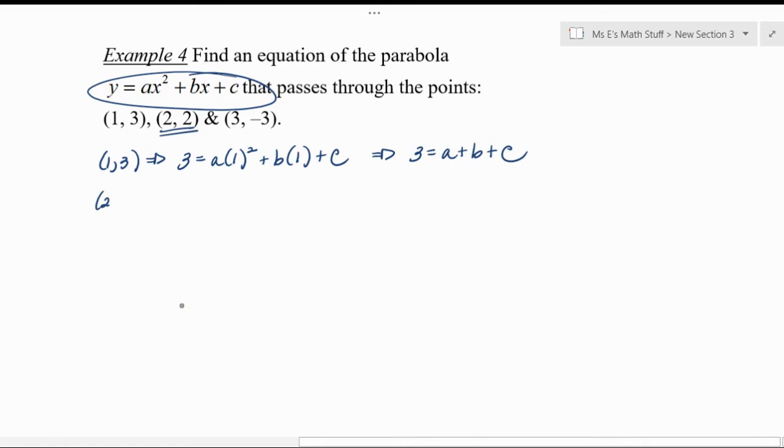So we'll just use each one. So 2, 2: 2 goes in for y and then 2 would go in for x. And then simplify it. The person you're simplifying for is yourself, so give yourself the gift of simplifying your math. And then 3, negative 3, let's put that in.